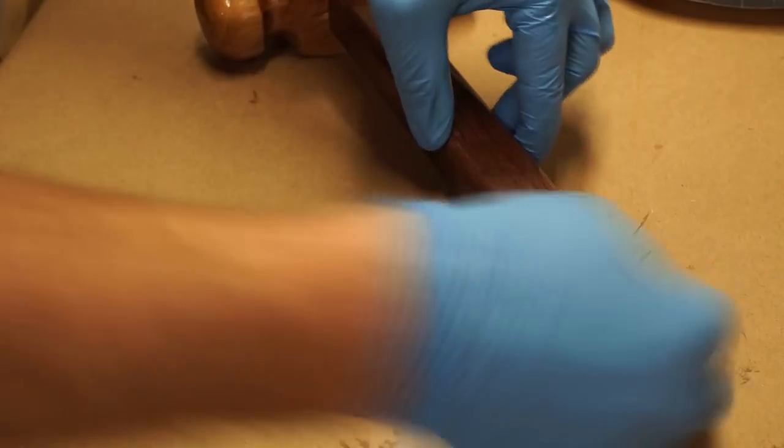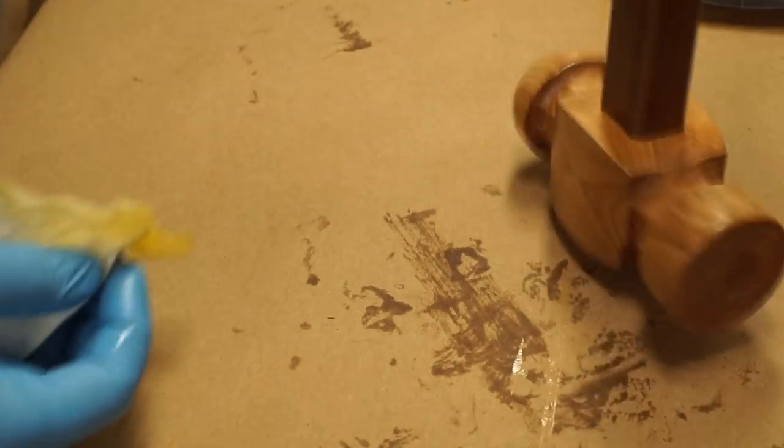On most of these mallets I use boiled linseed oil. It's easy to apply and you can apply multiple coats afterward in case you need to do some maintenance to your mallet.